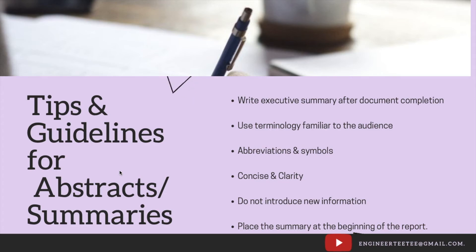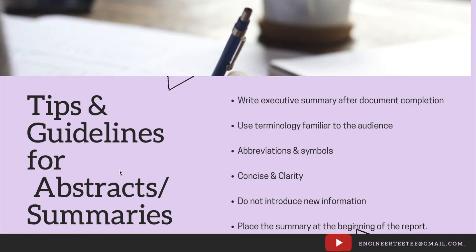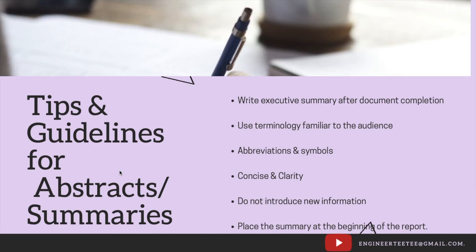It should be concise and clear. For abstracts submitted to a journal, there is sometimes a word count, so it's important to make sure every word counts and that you say things as concisely as possible. Remember, the abstract or executive summary should be an accurate representation of the document, so we are not introducing new information. Every line in your summary should be traceable to other sections in the main body of the report. And as mentioned, you must place the summary at the beginning of the report, even though you write it after the document has been completed.